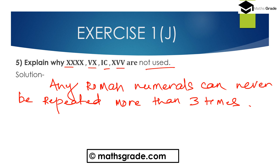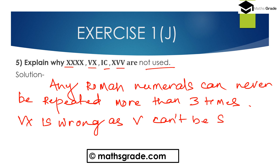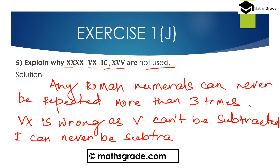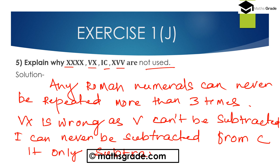VX is also wrong because V can never be subtracted from X. IC is also wrong because I can never be subtracted from C — I can only be subtracted from V and X.